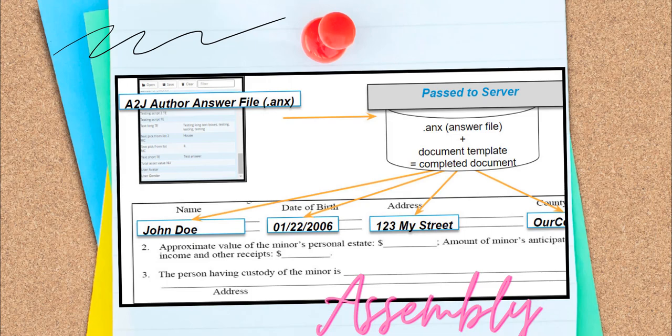When the end user gets to the end of the interview, they will click a button called something like Get My Document. At that point, A to J Author will send the user's answer file, that XML file of variables plus responses, to the server the interview and template are hosted on. That server will compile the answer file with the A to J template, and replace the variables on the template with the user's responses. This is called assembling the document.